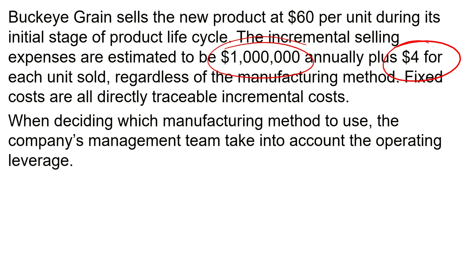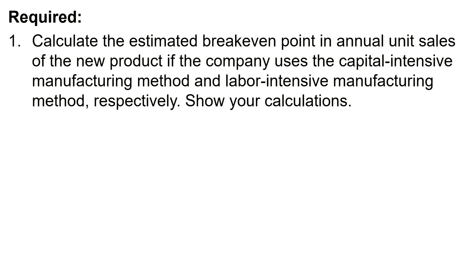When deciding which manufacturing method to use, the company's management team takes into account operating leverage. There are six requirements to work through. The first is to calculate the estimated break-even point in annual unit sales if the company uses the capital intensive manufacturing method and the labor intensive manufacturing method respectively, showing calculations — so we need two break-even calculations.